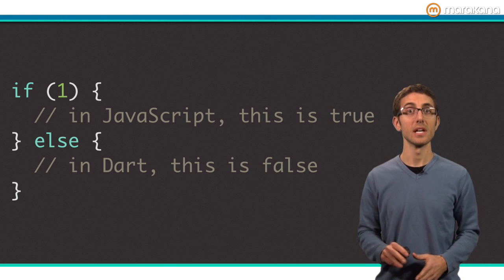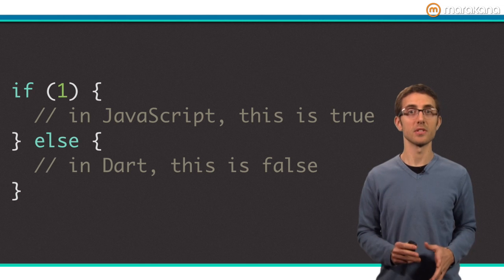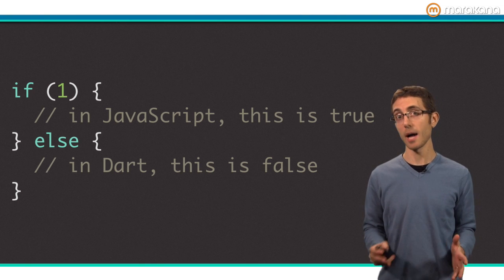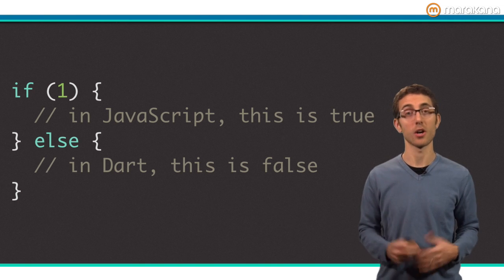In Dart, it's more simple. Only the Boolean value true is treated as true. In Dart, all object instances other than true are treated as false.